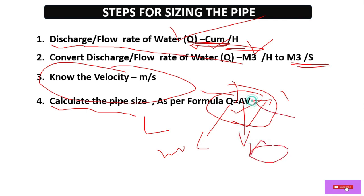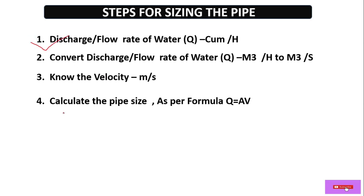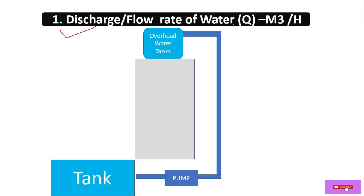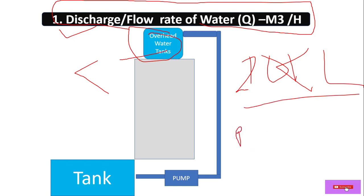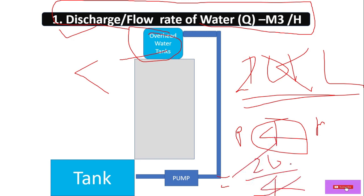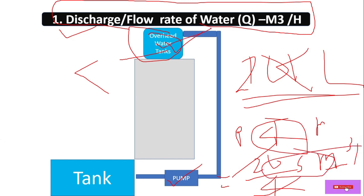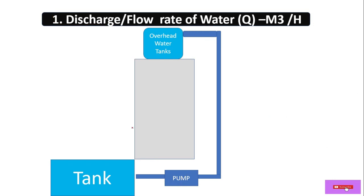In Step 1, we need to know the value of Q — the discharge or flow rate. Basically, flow rate means: if our tank capacity is 20 KL and our peak hour is 4 hours, then 20 divided by 4 equals 5 cubic meters per hour. So if we select a pump with a discharge of 5 cubic meters per hour, the tank will fill up in 4 hours.